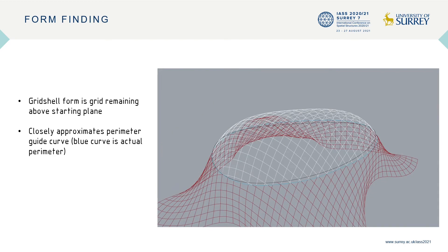This is the result of the form-finding process shown in the previous slide. As you can see, the final grid shell form is the white part of the grid remaining above the starting plane. The blue curve is the actual perimeter, which closely approximates the perimeter guide curve shown in black.